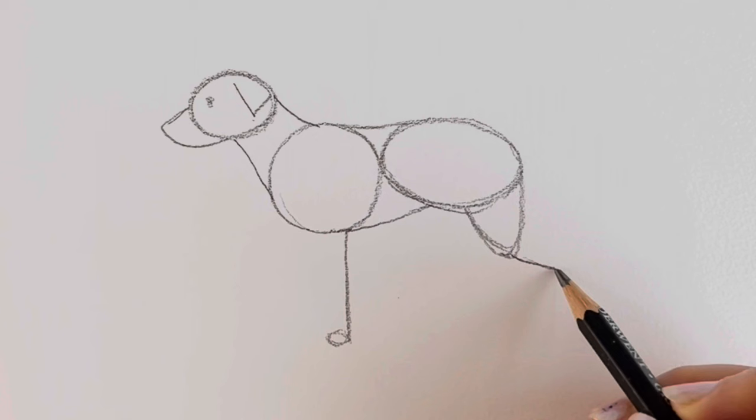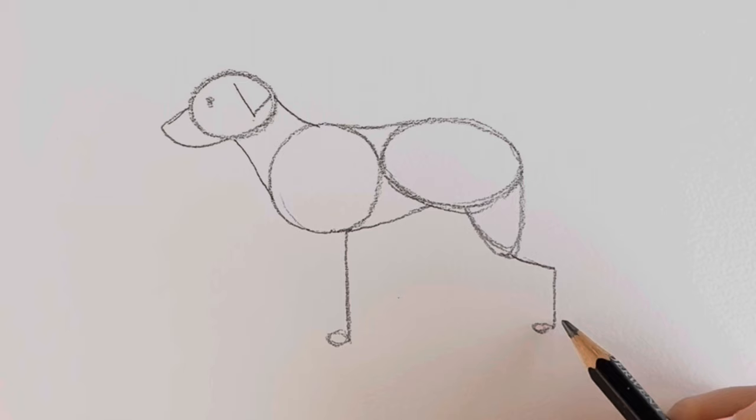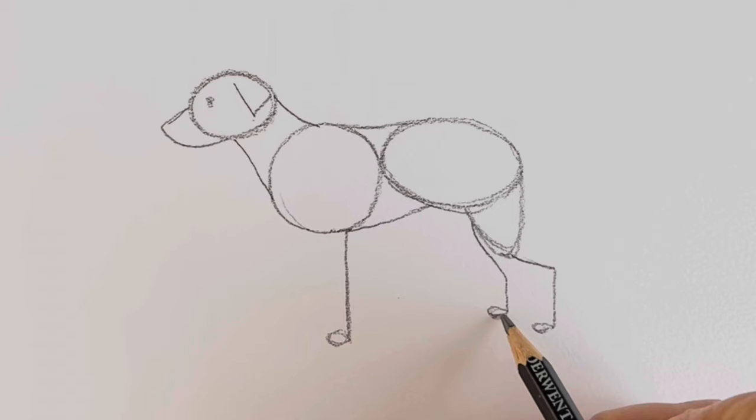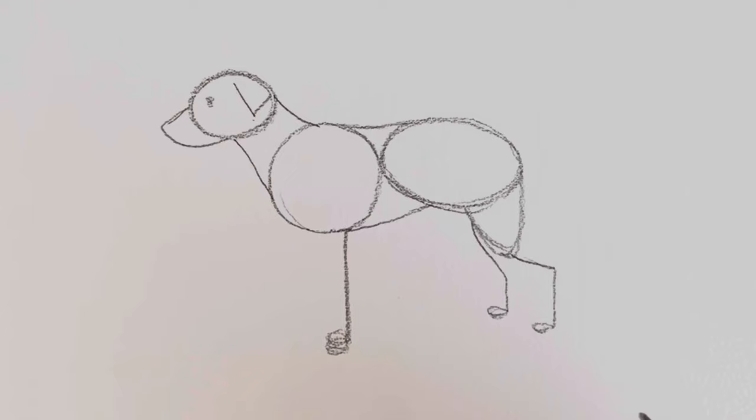Then we're going to come round to the side. And there's going to be a kink here, come down and then the paw. We're going to be doing that for the other hind leg, so just peeping out round behind here. A kink and then a paw. There we go. I'm just going to make this leg just a fraction longer.